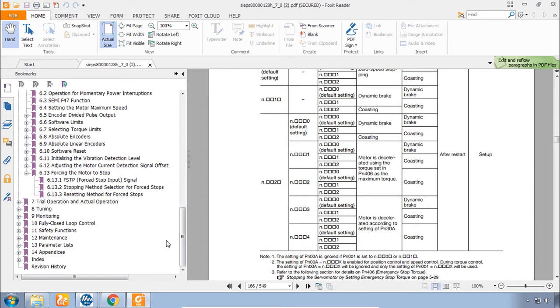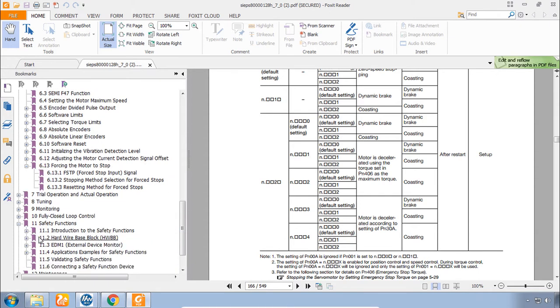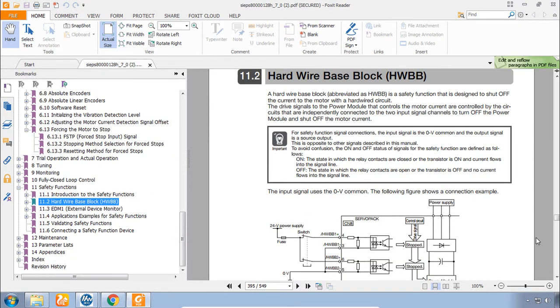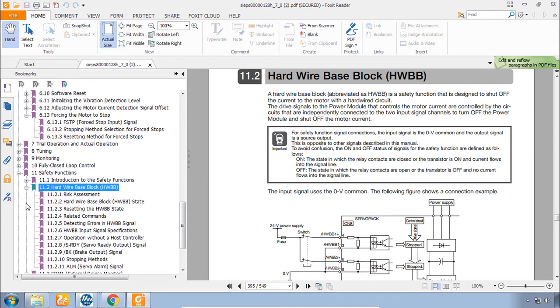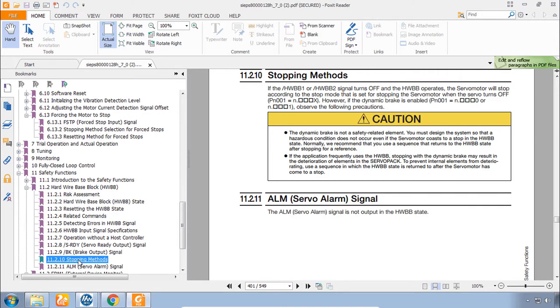And that signal gives you the status of that input. The details for this one are in the manual. In section 11 safety function. Let's go to 11.2. There's a lot of information in here. But one of them we'll focus on is the stopping methods. And you can see that this uses the same parameter, parameter PN001. The same stopping method that's used for servo off-stop.